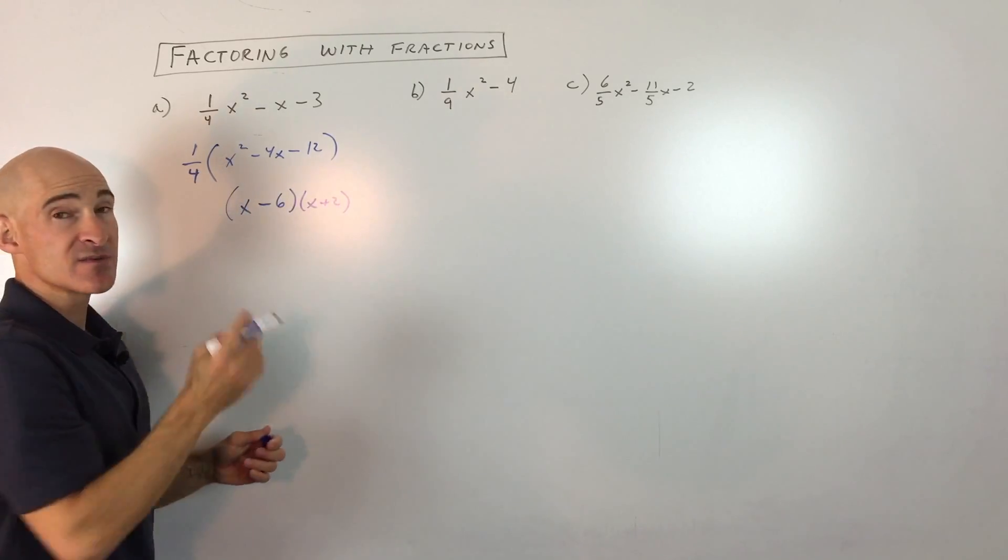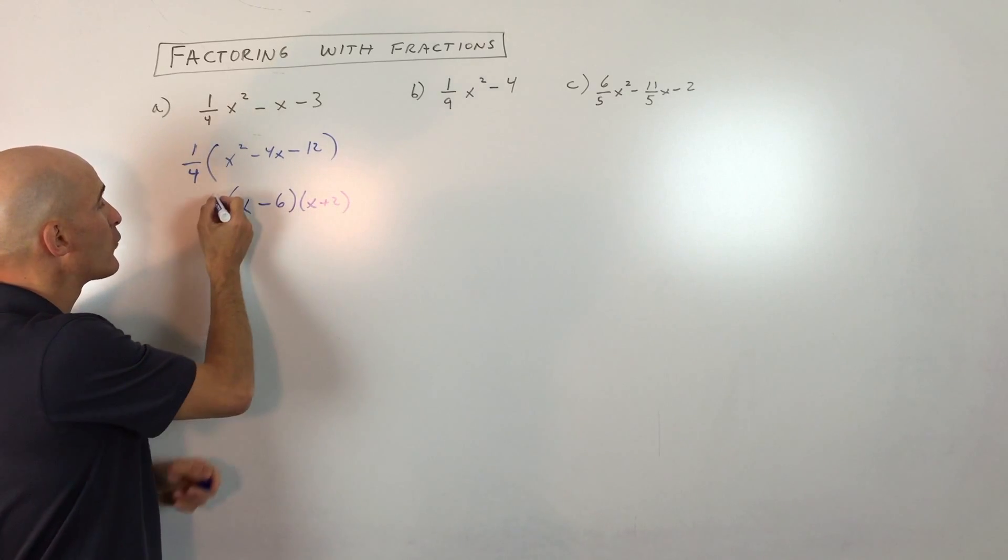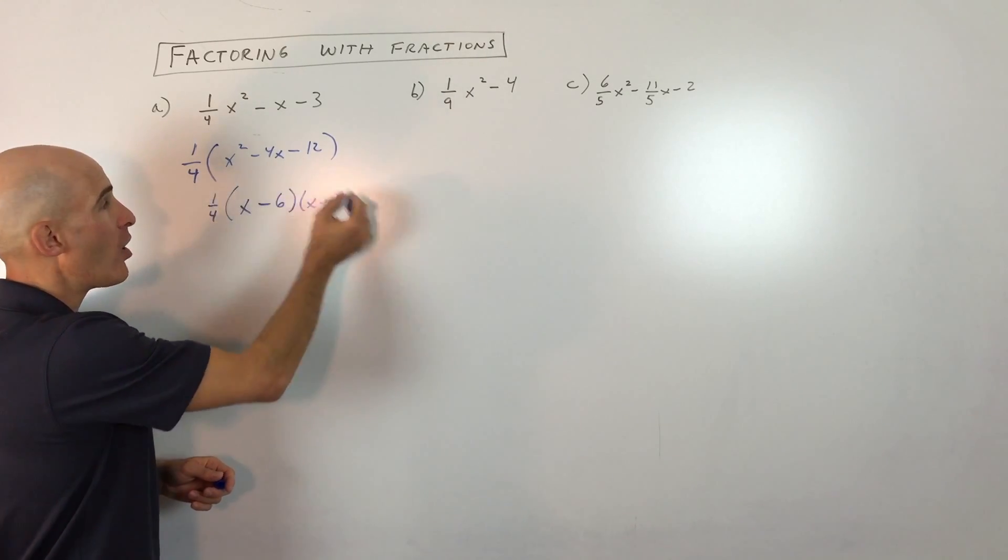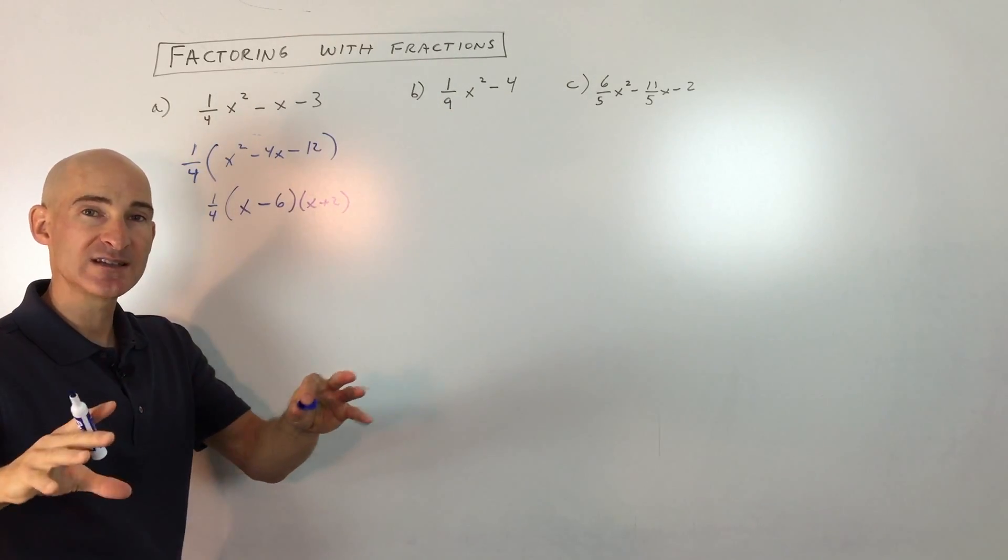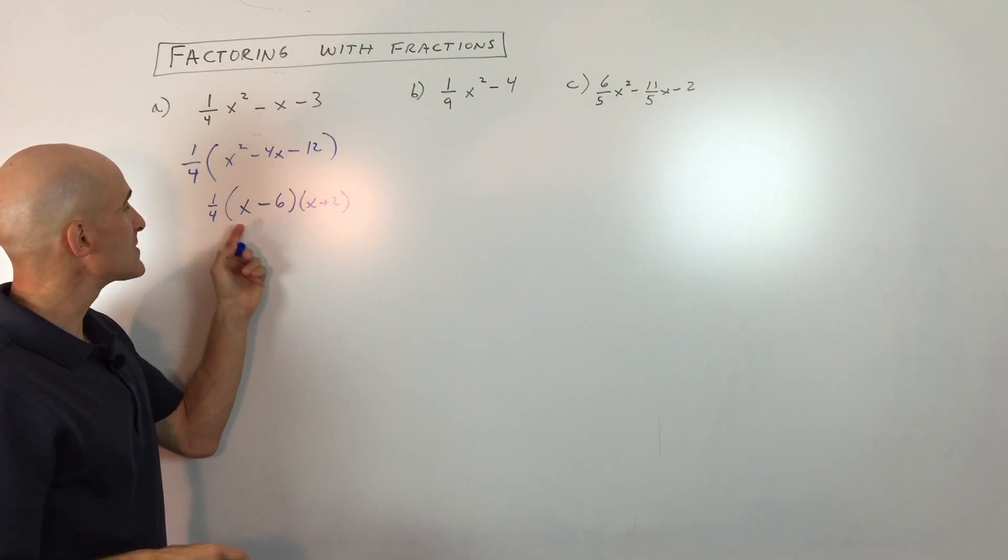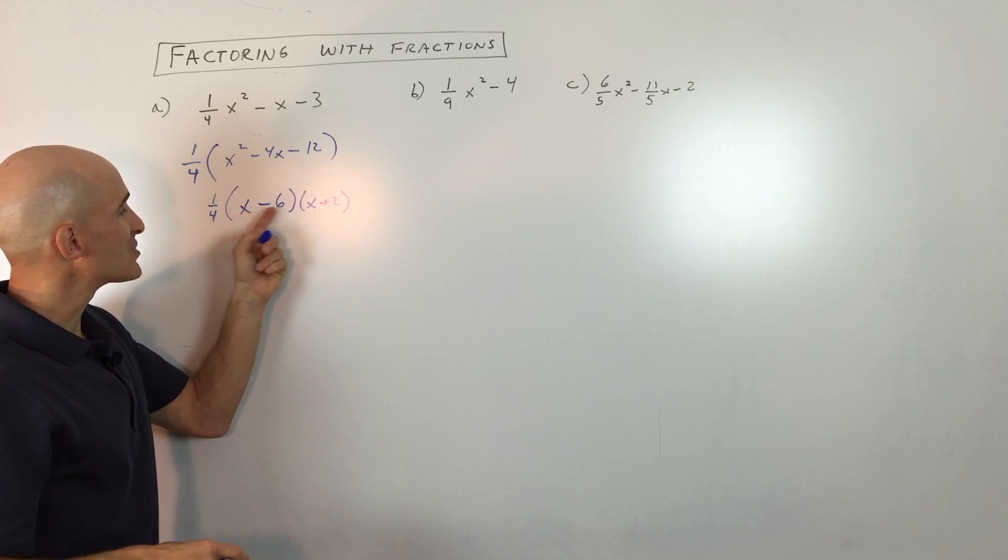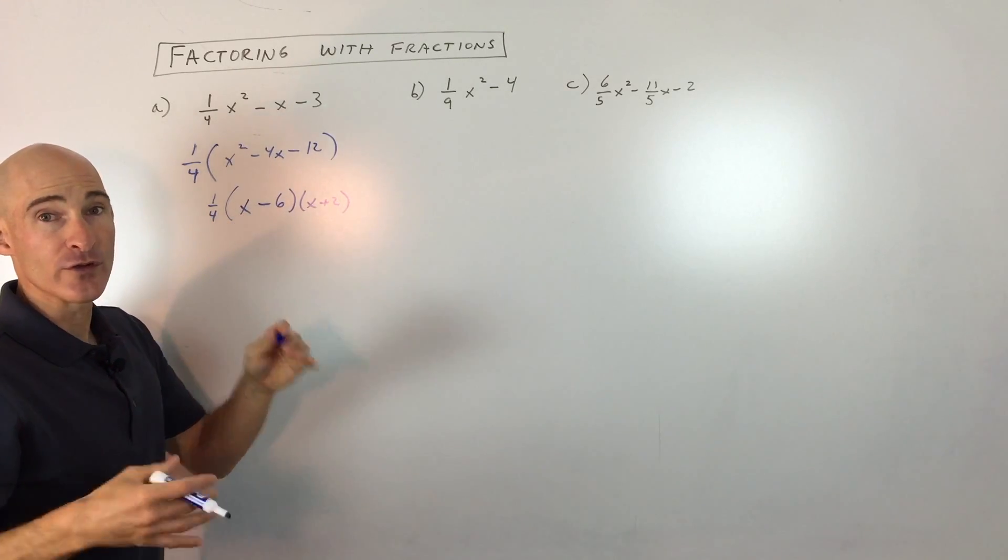And then what you want to do, and sometimes students forget this, is you want to bring that one-fourth down. Because if you were to multiply all this together, you'll get back the original. So factoring is just like a way of breaking it down into smaller components. But you can see, again, see how these are just integers? And we've factored out that one-fourth.